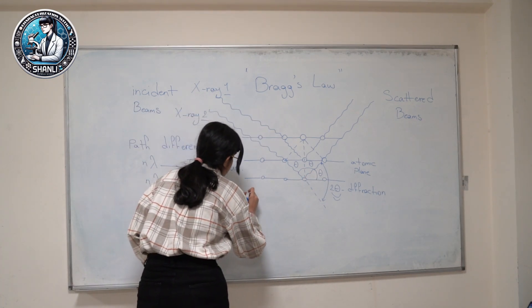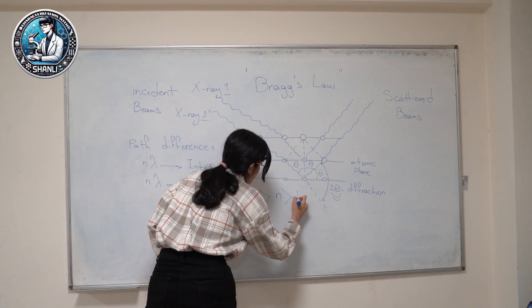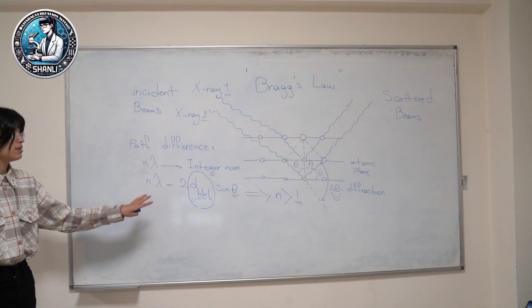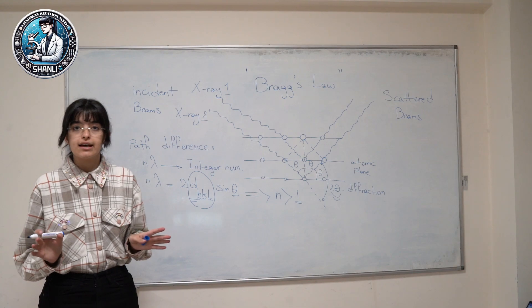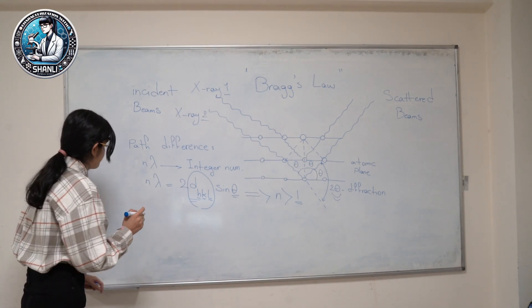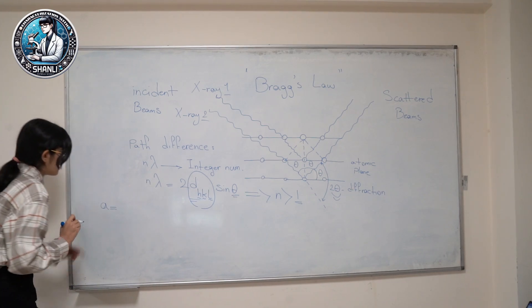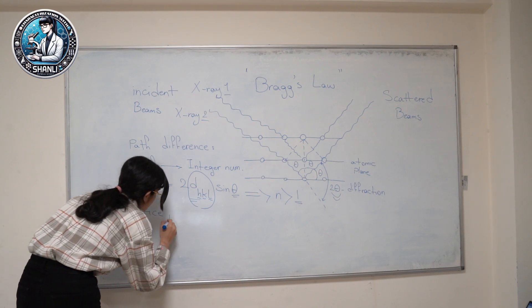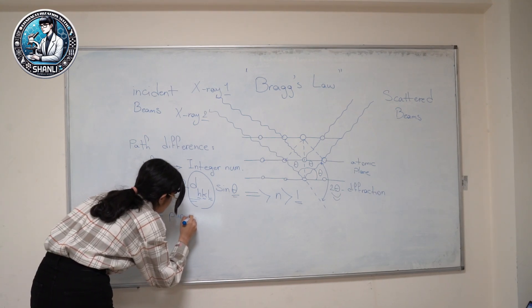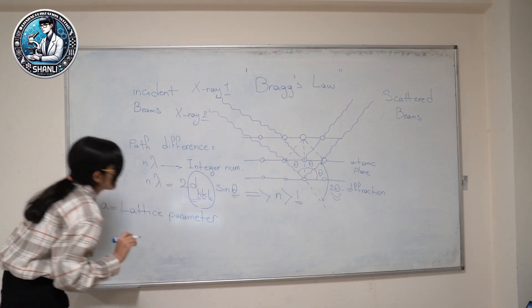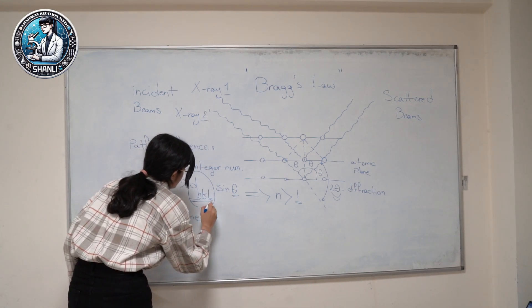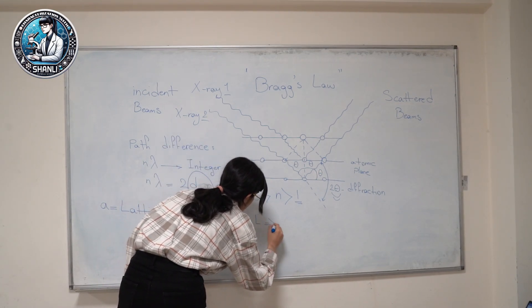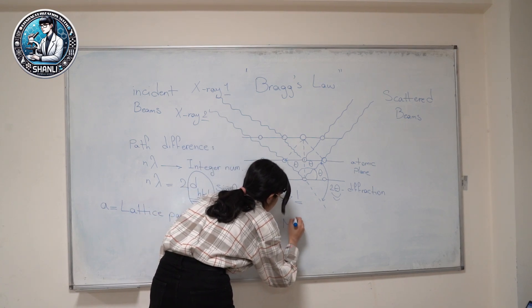So from this equation, we can also calculate the lattice parameter, A. Let A be our lattice parameter, and here h, k, l be our miller indices. So we would be able to calculate the lattice parameter A from the equation...